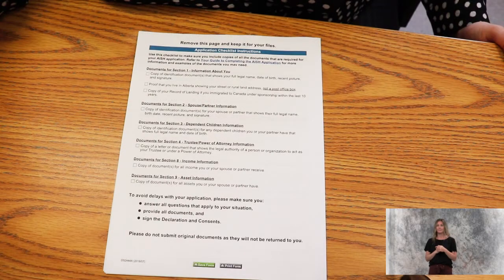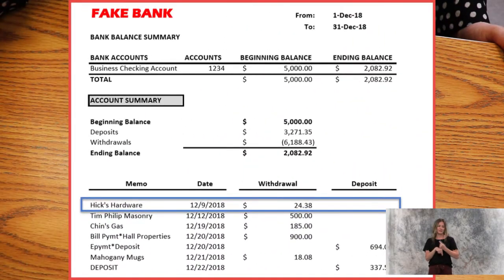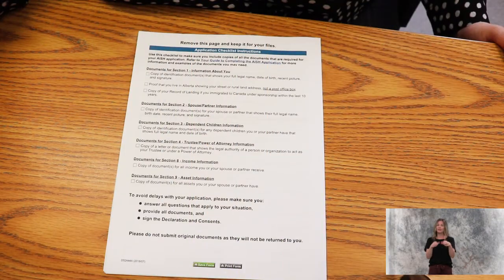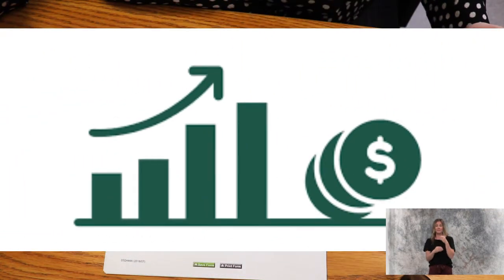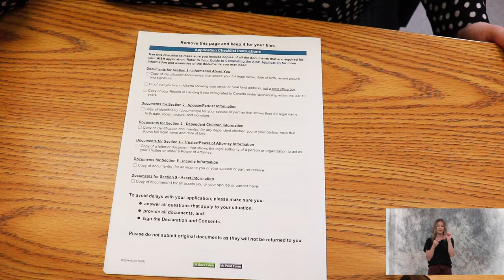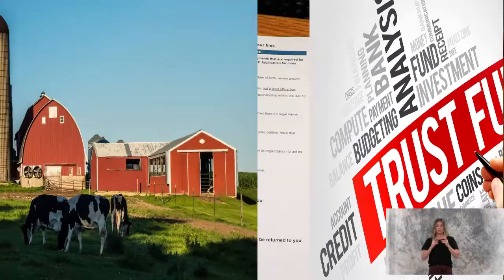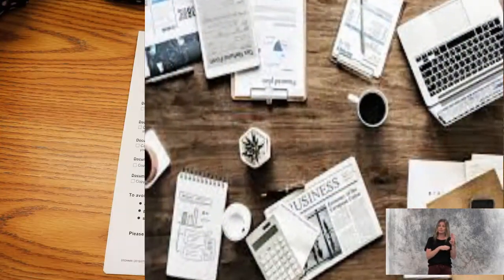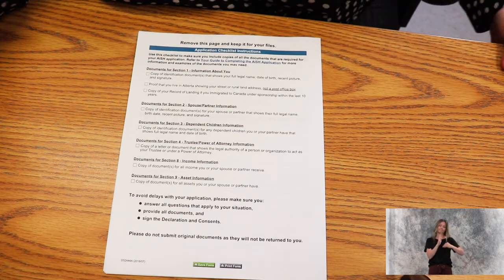We also need confirmation of all assets you and your partner have. Your 30-day bank statement will show your checking and savings accounts or any joint accounts. Do you have any investments? GICs, RRSPs, RDSP, RESP, TFSA, annuities, etc. Do you have a trust account? Do you own a farm or a business? This is all the information you will need in order to have a completed application.